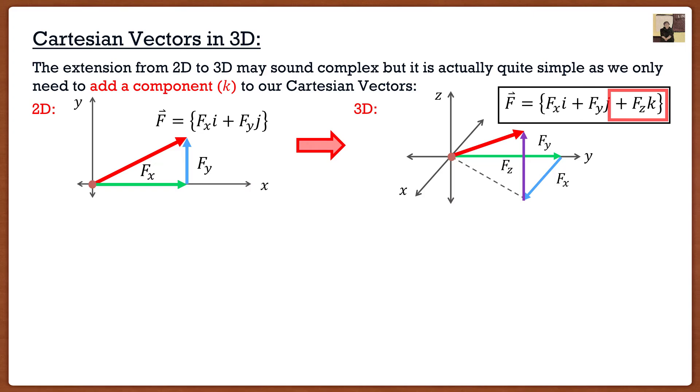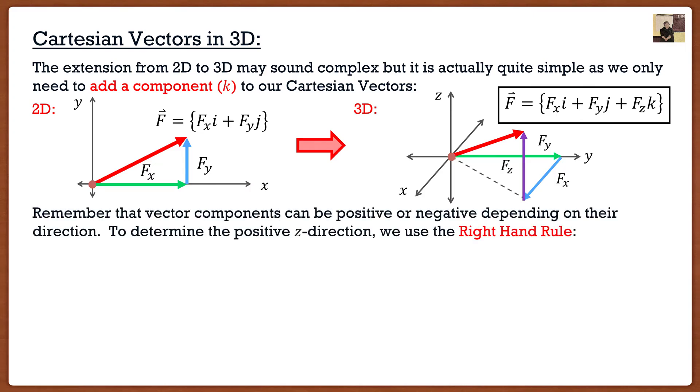Now the first thing that comes to 3D that students start to hate is something called the right-hand rule. Because typically what's going to happen in exam scenarios is that professors will label the x-axis and the y-axis, but they won't label the positive z-axis. Us as engineers always think, oh, positive is always up, right? But actually the positive z direction follows something called the right-hand rule. Let's go over it. It's a series of steps.